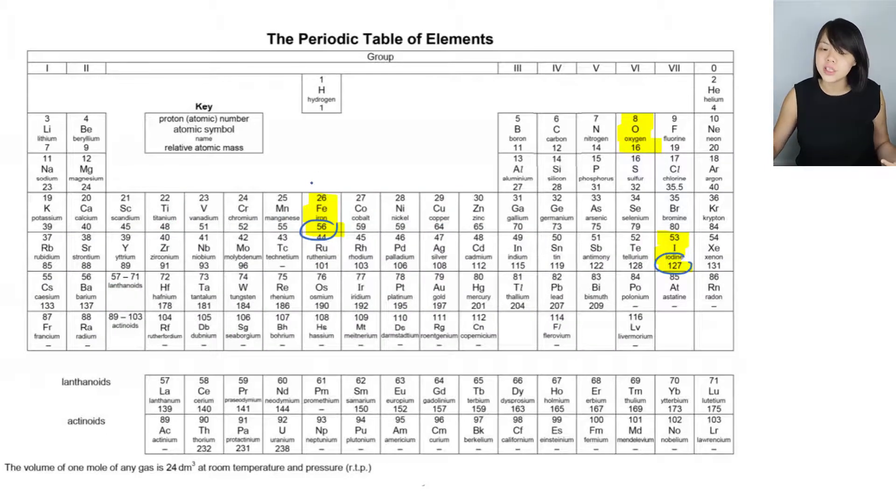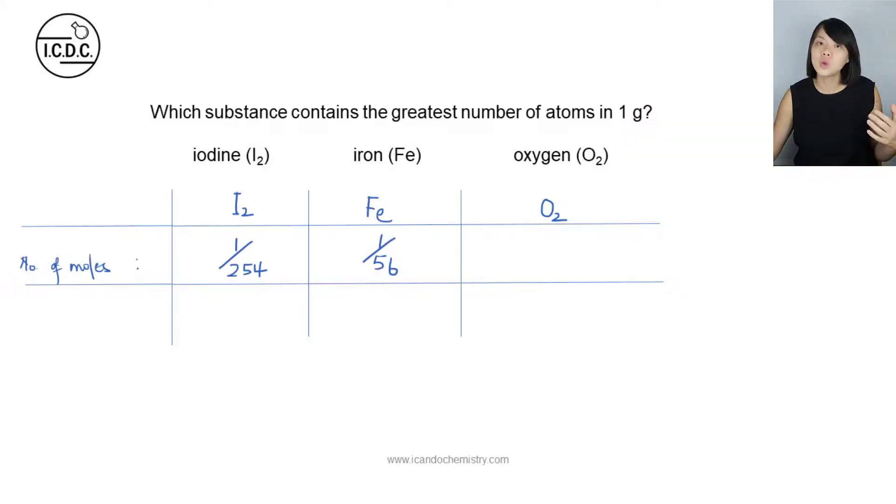Oxygen is over here. What is the relative atomic mass of oxygen? It is 16. So what is the molar mass of oxygen gas? It will be 16 multiplied by 2, which is 32. So to determine the number of moles of oxygen gas, we will need to use the mass divided by the molar mass, which is 32.